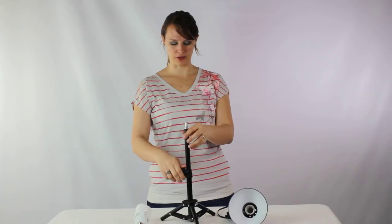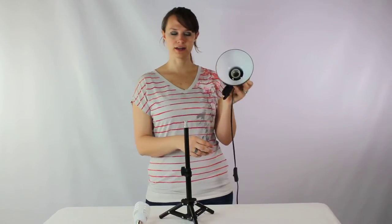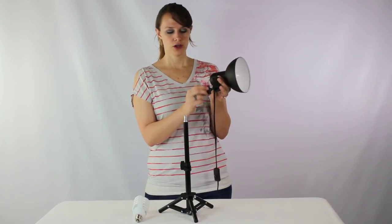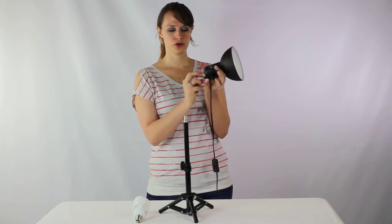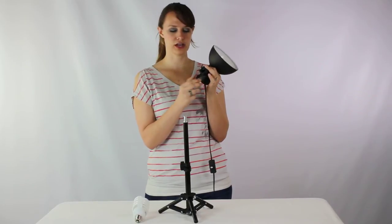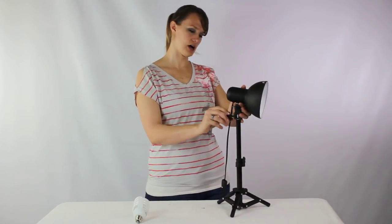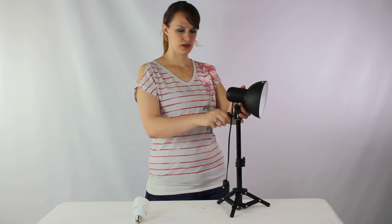Once you have your stand put together, then you're going to go ahead and attach your reflector. This reflector is ready to go. It already has an AC socket built into it. You're simply going to unscrew the bottom portion here that secures the stand. Once you have that open, you're just going to slide it right over the top and tighten it up.